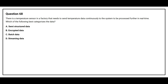Question 68: There is a temperature sensor in a factory that needs to send temperature data continuously to the system to be processed further in real time. Which of the following best categorizes the data? Option A, semi-structured data. Option B, encrypted data. Option C, batch data. Option D, streaming data. The correct answer is Option D, streaming data.